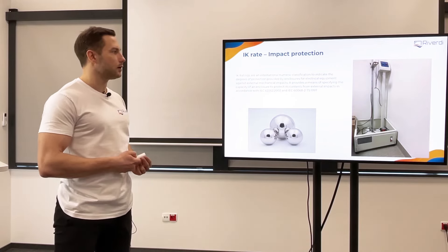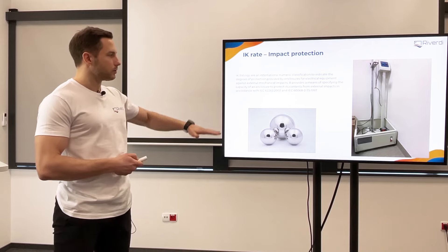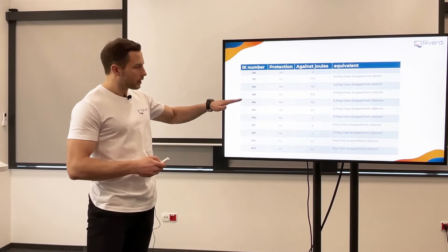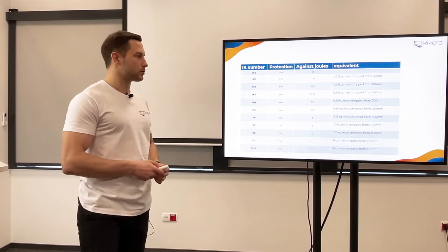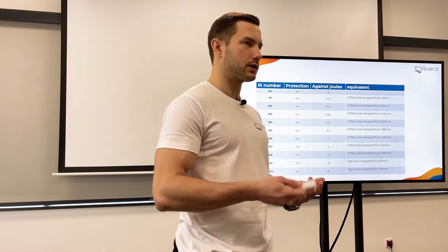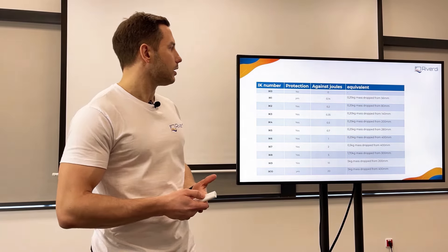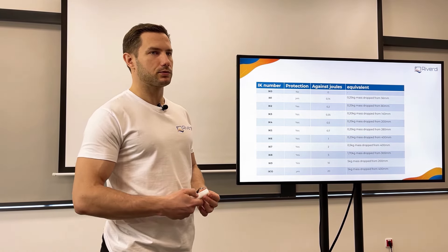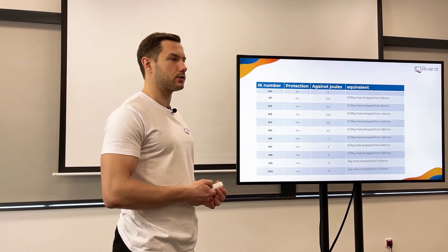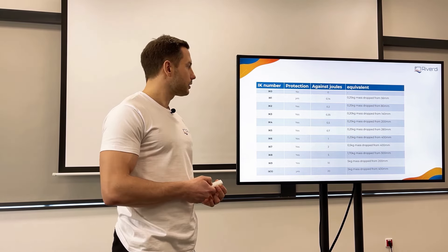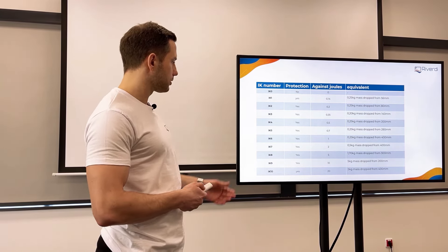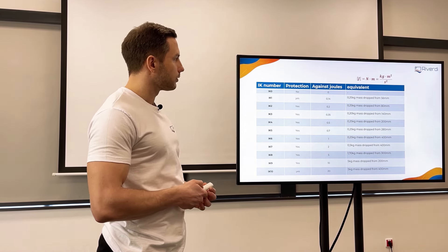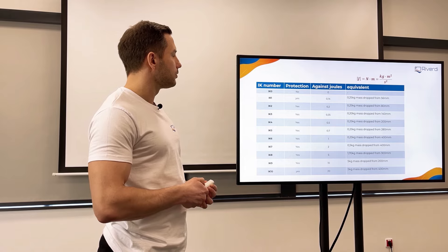If it doesn't break, of course the test is passed. If it breaks, it's not. So we try to find where we are on the scale, and if we are not where we want to be, we try to change the glass type — like changing from thermally tempered to chemically strengthened — or maybe go to a thicker glass. Sometimes that's the only solution: to use thicker glass to have stronger performance.